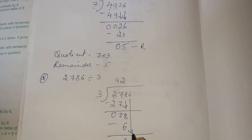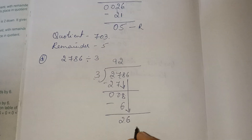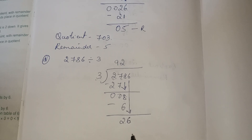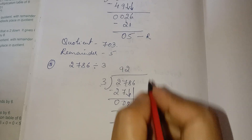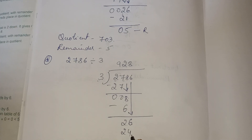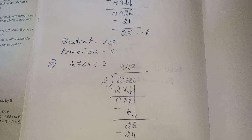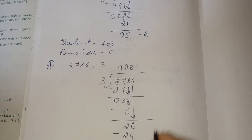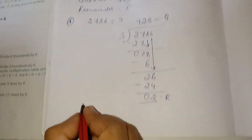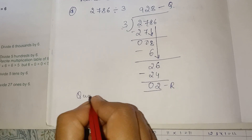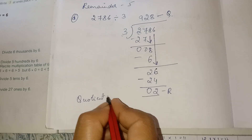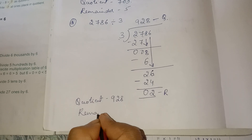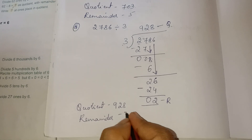Take another number down — it is 26. 3 nines are 27, 3 eights are 24. So 3 eights are 24. Subtract — get 2. The remainder is 2 and the quotient is 928.